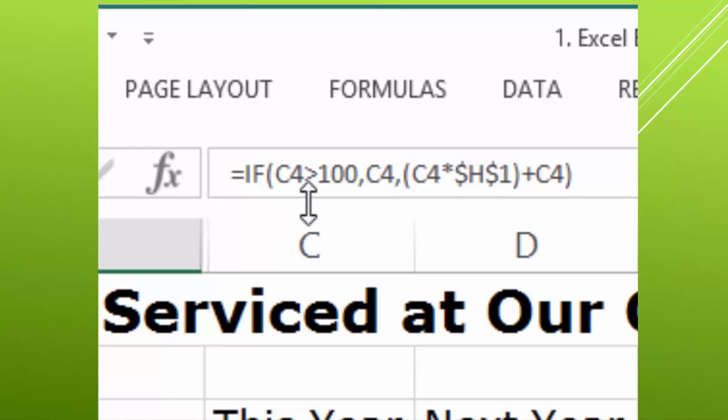So now this IF function says, look at the original value. If it's more than 100, which is our cap, then return the original value. Otherwise, take the original value, multiply it by our percentage increase, and add back in the original value. So all of this is just review. You've already done that. You just need to know about this first part. So let me show you how that's done.